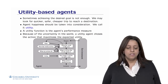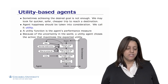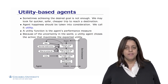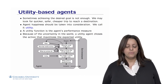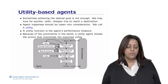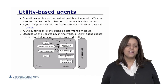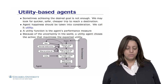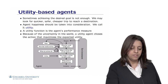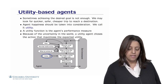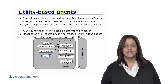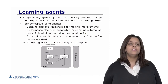Sometimes achieving the goal is not enough — we may look for a quicker, safer, or cheaper way to reach a destination. Agent happiness must be factored in; we call this utility, using the economics and computer science jargon. The utility function is the agent's performance measure, and because of uncertainty in the world, a utility agent chooses the action that maximizes not just utility but expected or average utility. The utility function assesses how happy the agent is in a given state and determines which actions to take.